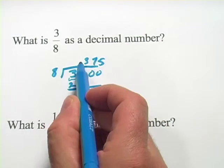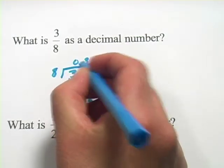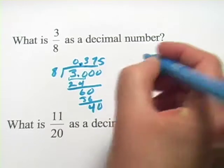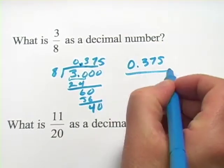And we're going to put our decimal point on the same column, so this is .375. So our answer here is 0.375, that's what 3 eighths is.